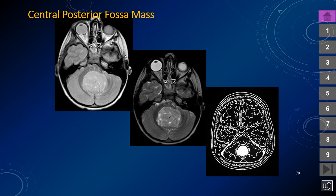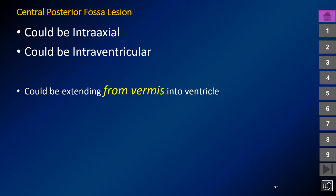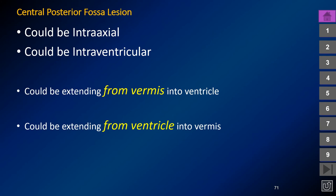Medulloblastomas may arise within the ventricle or within the vermis and grow into the ventricle, or within the cerebellar hemisphere secondarily encroaching on the fourth ventricle. Tumors arising within the ventricle tend to respect the ependymal lining and stay within the ventricle, so involvement of the vermis and ventricle simultaneously is strongly suggestive of a lesion beginning in the vermis — therefore not an ependymoma but much more likely a medulloblastoma.